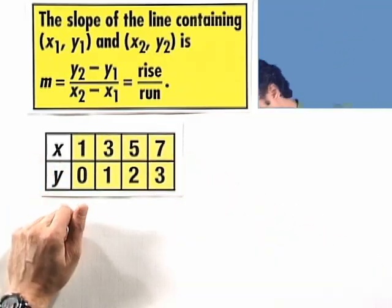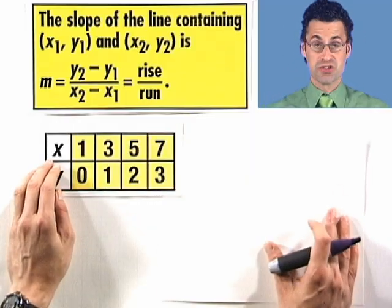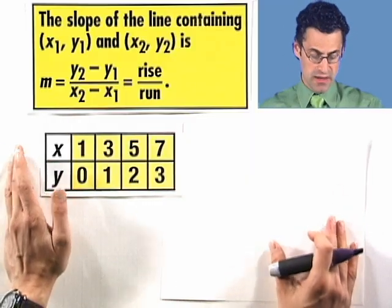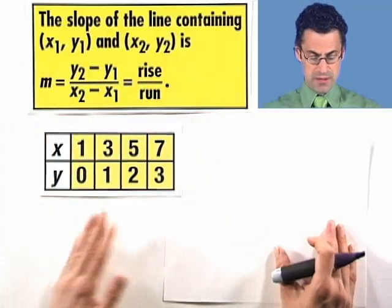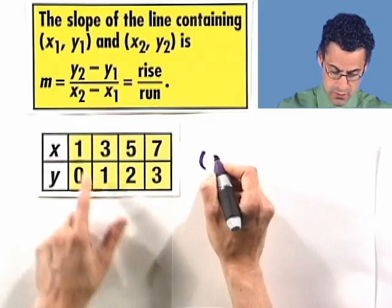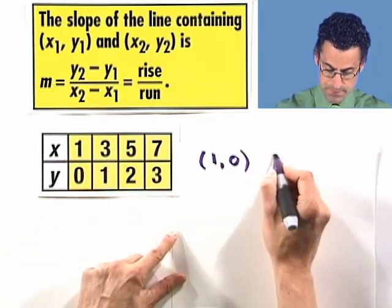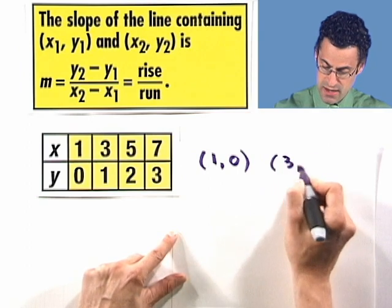Here, I tell you that this is a table that represents a linear equation. We're told that. All we want to do is find the slope. If we want to do that, all we have to do is get 2 points, and we can pick any 2 points that we wish. So how about if I pick the point 1 comma 0, and the point right next to it, which is 3 comma 1.